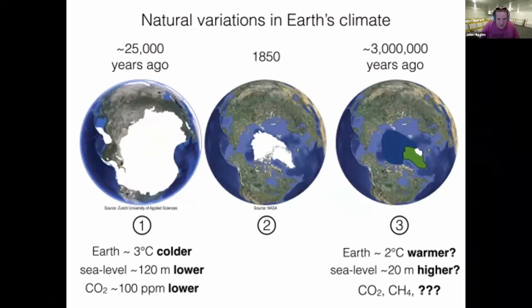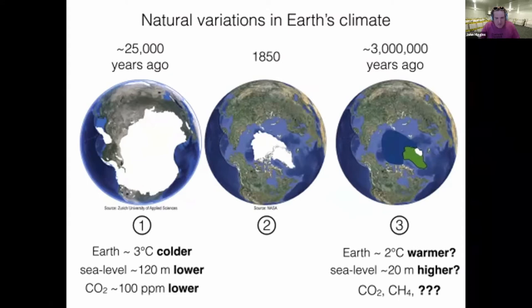I've got three different images showing a top-down view of the planet. The one in the middle is probably what you're most familiar with — what the planet has looked like, looking down from the Northern Hemisphere, since about 1850. You see Greenland here in the middle. This is the climate that we're used to, and that our grandparents and great-grandparents were used to. But go back about 25,000 years ago, and the Northern Hemisphere looked very different.